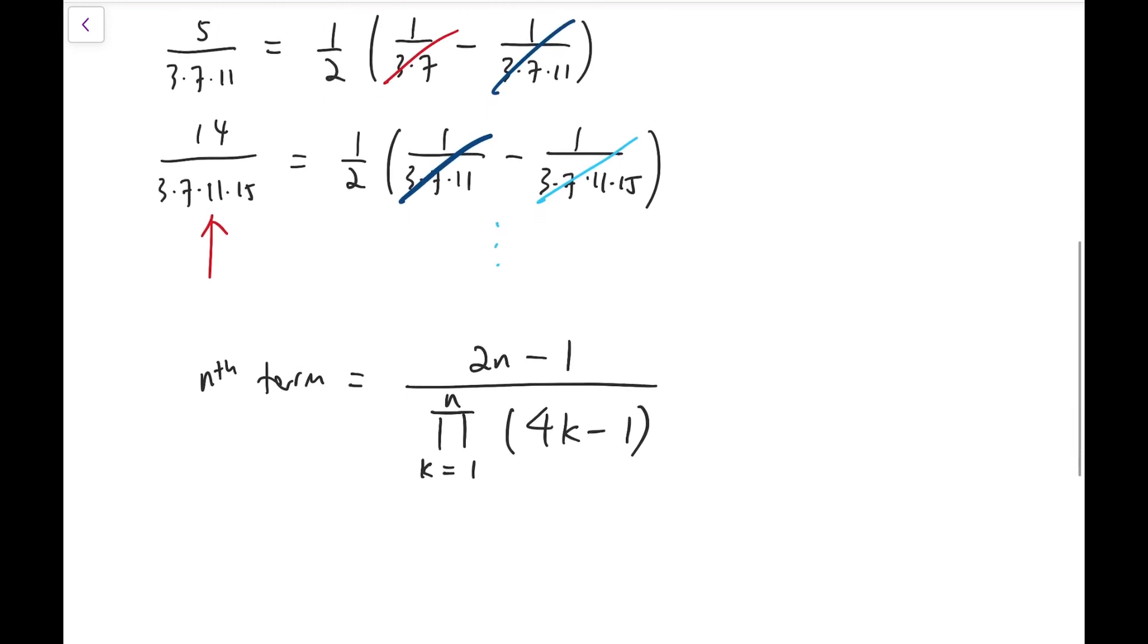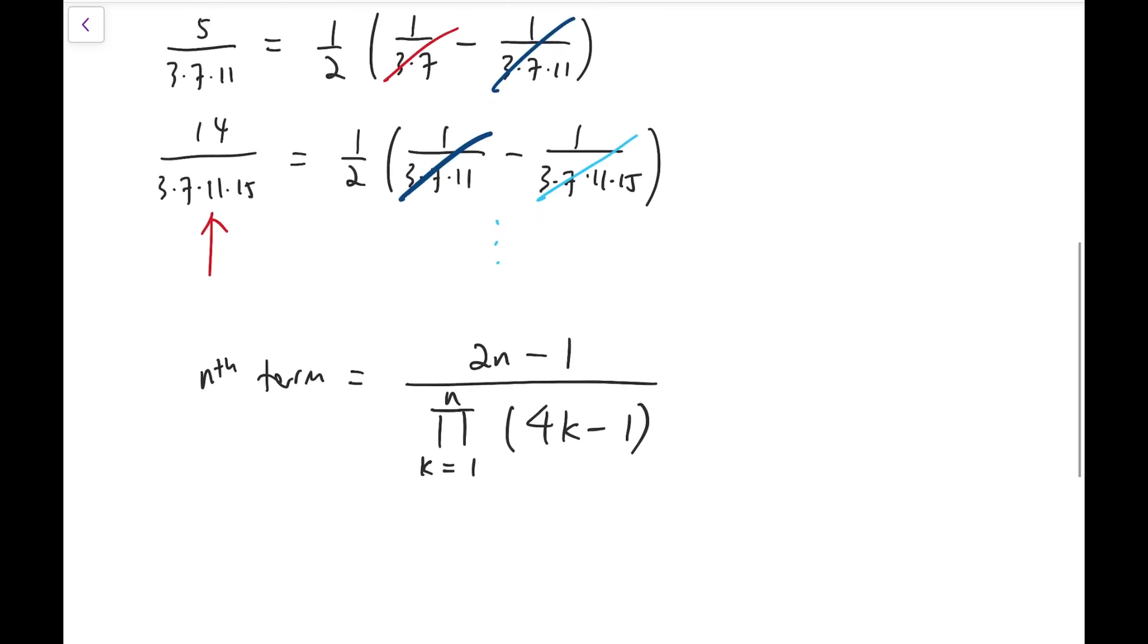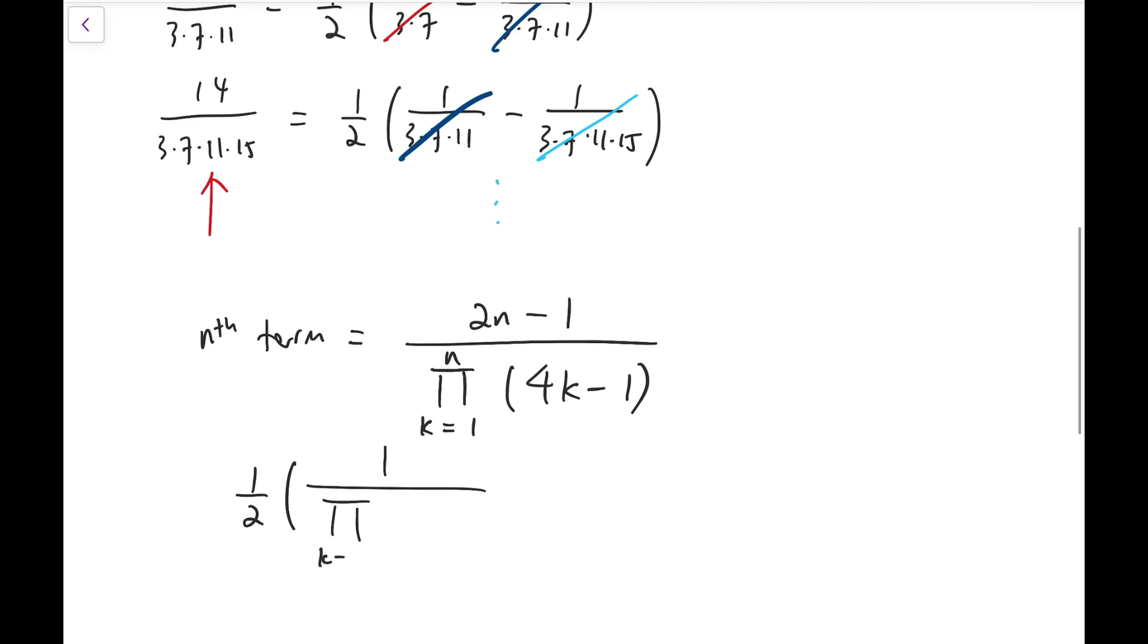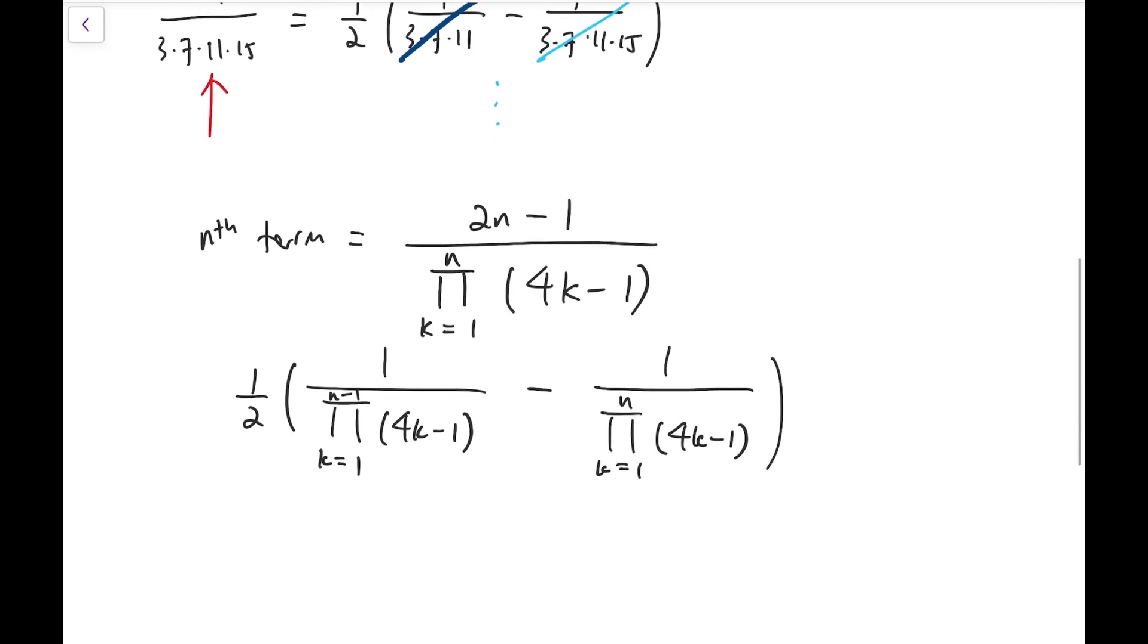Now, for this, I'm going to claim that one-half of the product of the first n minus 1 terms of this form 4k minus 1, minus 1 over multiplying the first n terms of the form 4k minus 1, is going to be equal to the general term of our series.